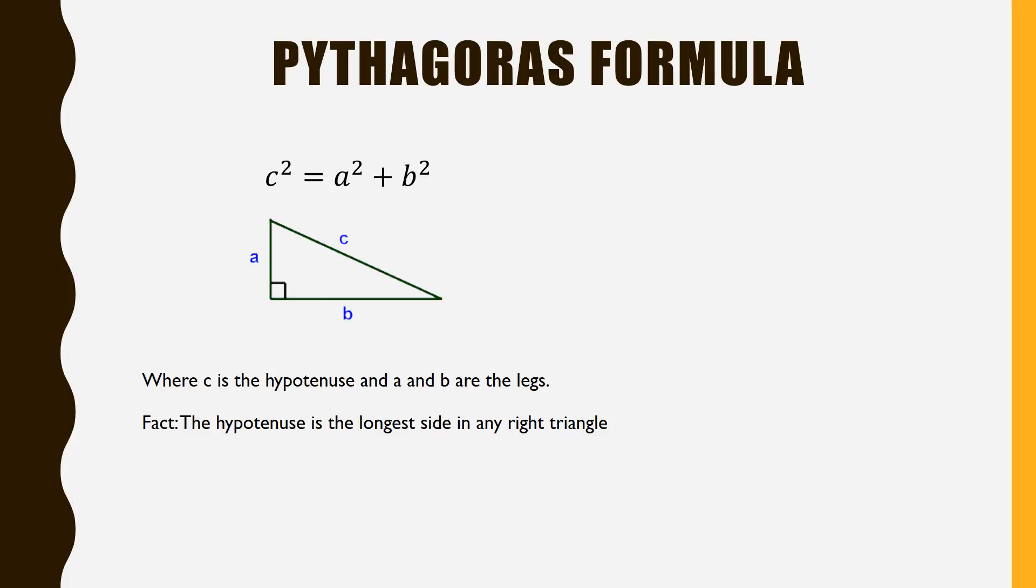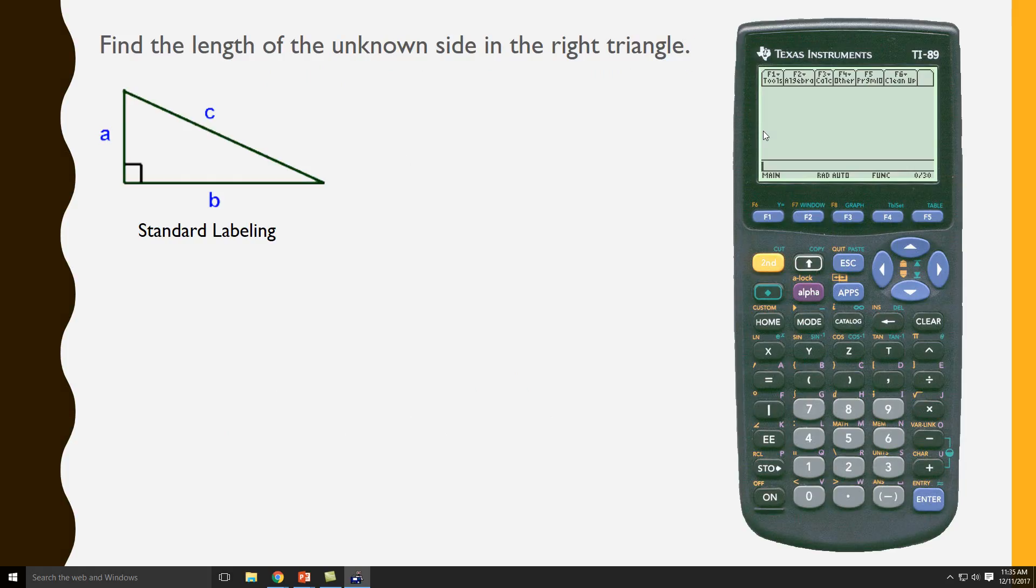Let's take a look at an example. In this example we're asked to find the length of the unknown side in the right triangle. This triangle uses the standard labeling.